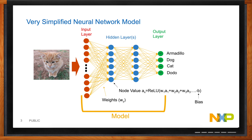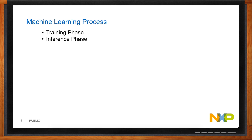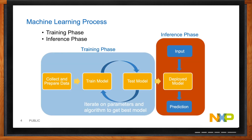That brings us to how we determine those weights and biases. There are two phases in machine learning. The training phase involves many thousands to millions of iterations where you give it input data, it makes a calculation, and you determine if the answer is correct. If not, you adjust the biases and try again — iterating to find the best values for the most photos. Once you have a model that's as accurate as possible on training data, you move to the inference phase: you give it new, unseen data, run inference, and it gives you a prediction — which determines the model's real-world accuracy.